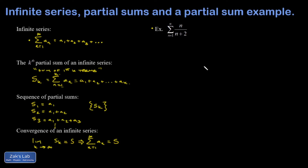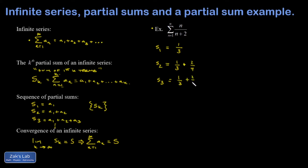Let's apply these ideas to the example on the right. I want to write down the first several partial sums, detect a pattern, and see whether this series converges. s_1 is just the first term — substituting n equals 1 gives 1 over 1+2, which is 1/3. s_2 is the sum of the first two terms: 1/3 plus the n equals 2 term, which is 2/4. s_3 is 1/3 plus 2/4 plus the n equals 3 term, which is 3/5.